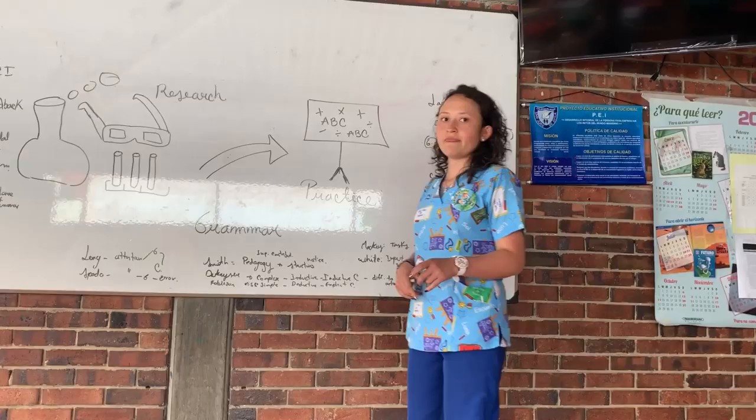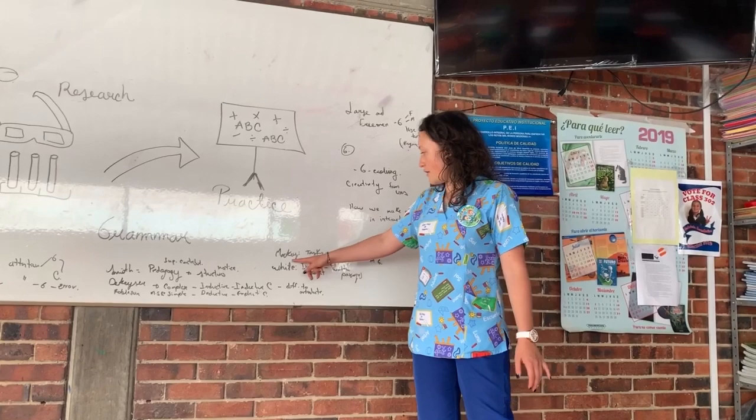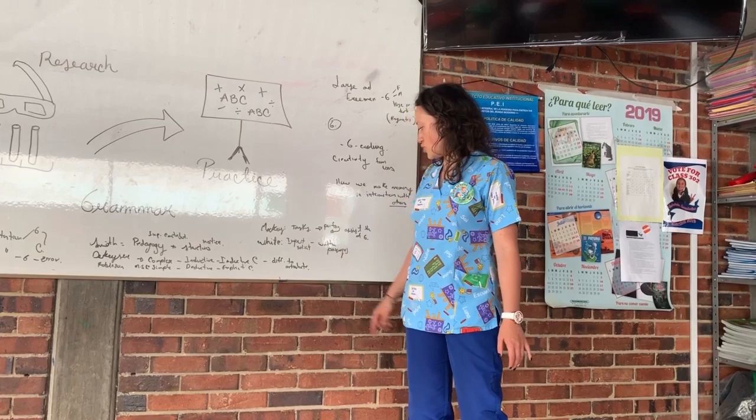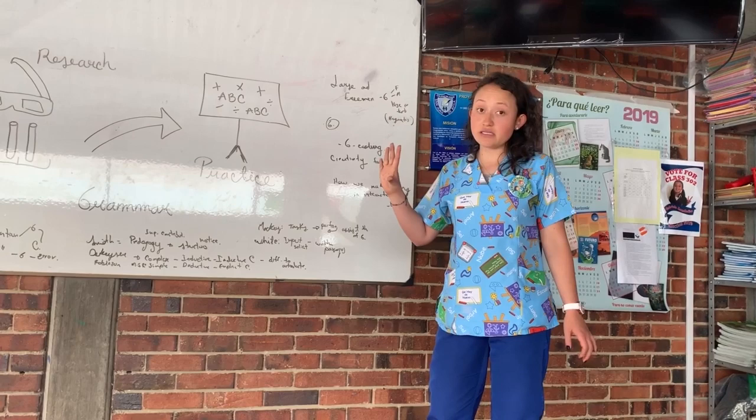Two strategies we have here are tasks and salient input. Maitley has said that students who perform tasks can acquire grammar structures. And regarding salient input, we can do it, for example, by highlighting grammar structures in a reading passage.